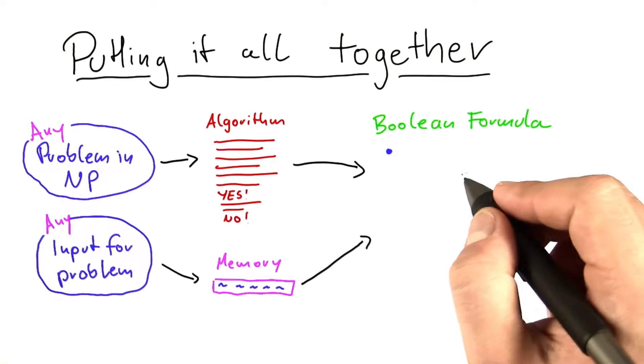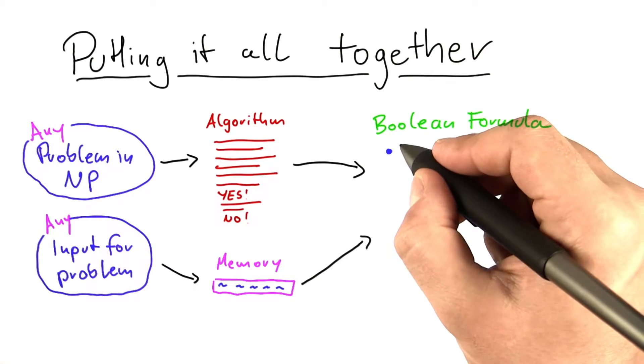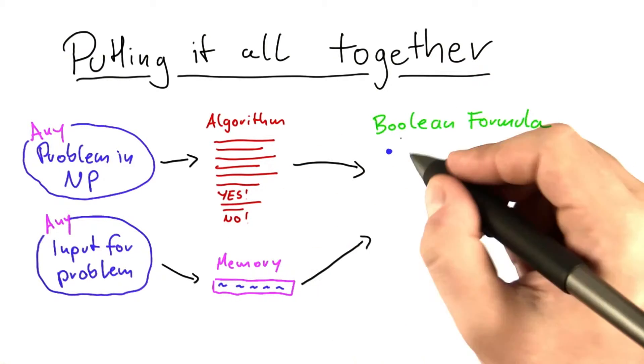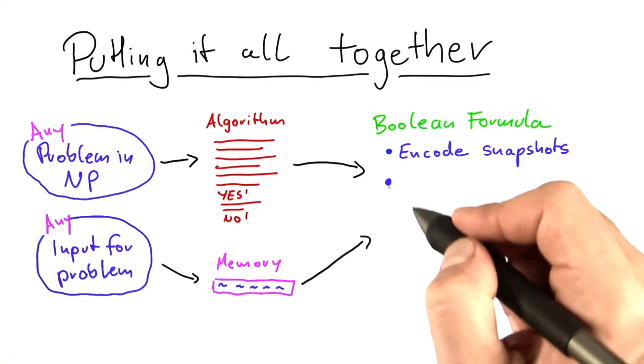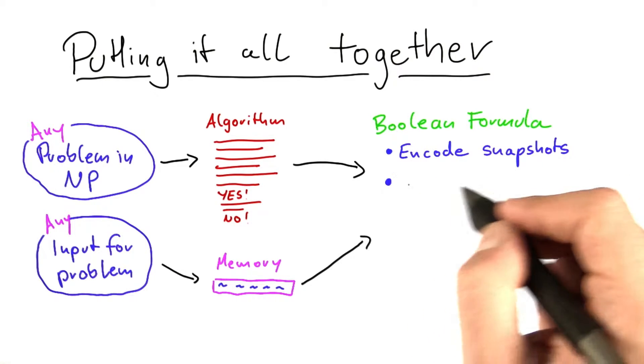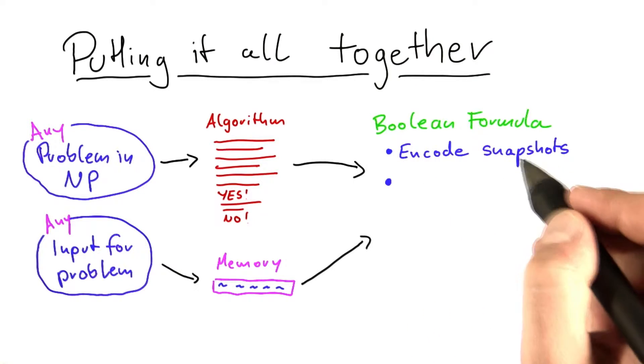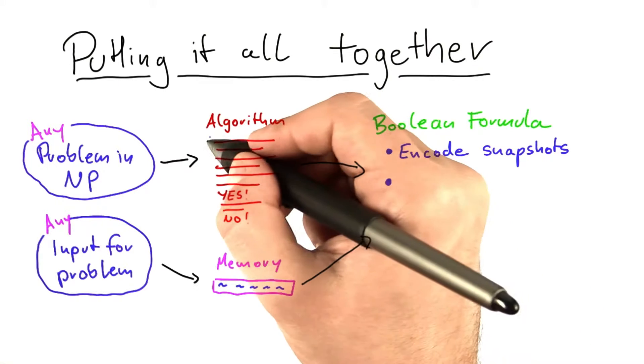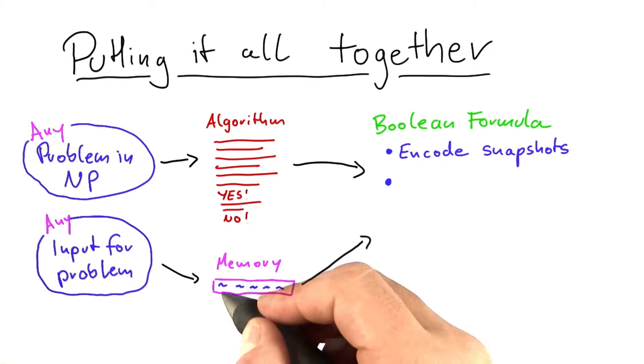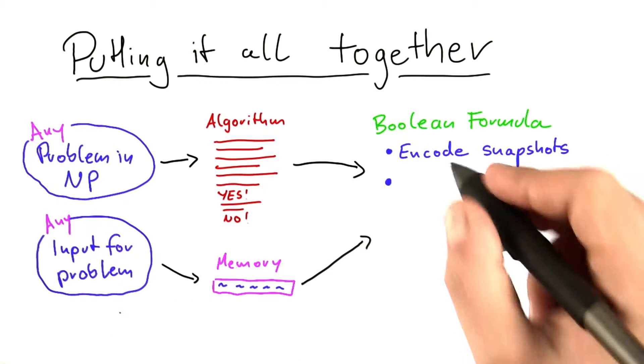So one part of the Boolean formula encodes snapshots of the algorithm as it runs on the machine. Then we said we have to have one part that ensures that the first snapshot properly represents the starting conditions, so that it properly represents the algorithm starting at line one and also the memory representing the input for the problem.